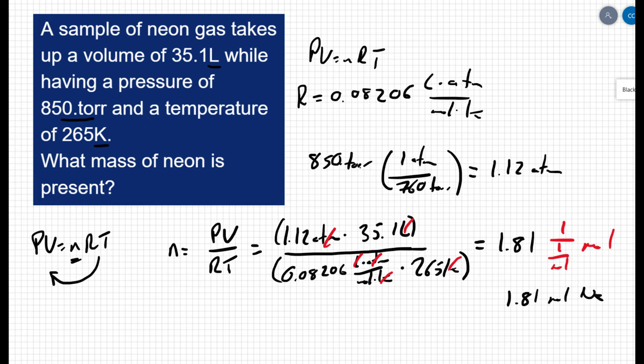But the question is asking for the mass of neon. So before we can call ourselves done, we're going to have to do one more conversion. I'm going to take my 1.81 moles of neon, and I know the molar mass of neon is 20.2 grams for every 1 mole. So to get my final answer, I'm going to convert to grams, and I get 36.5 grams.